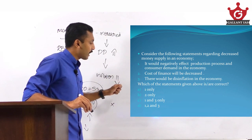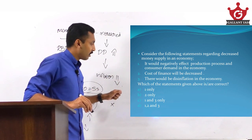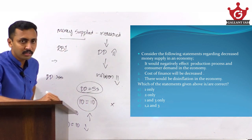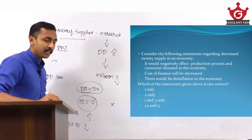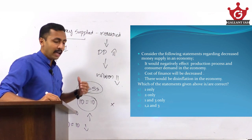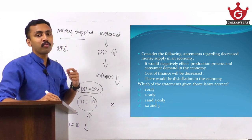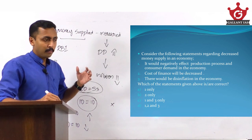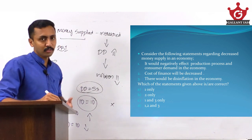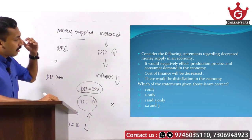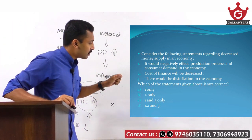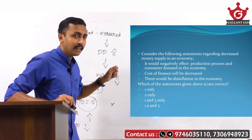Third statement: there would be disinflation in the economy. Of course, if there is decreased money supply in the economy, disinflation may occur — not inflation. That disinflation can potentially go into deflation also. So the third statement is also correct. Therefore the answer is option C — statements 1 and 3 only.